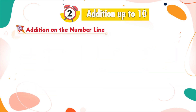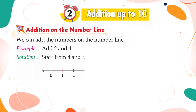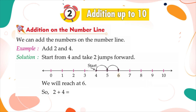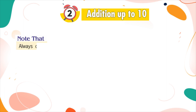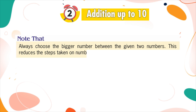Addition on the number line: We can add numbers on the number line. Example — add 2 and 4. Solution: Start from 4 and take two jumps forward. We will reach 6. So, 2 plus 4 is equal to 6. Note: always choose the bigger number between the two given numbers, as this reduces the steps taken on the number line.